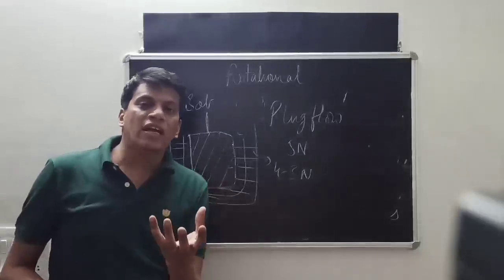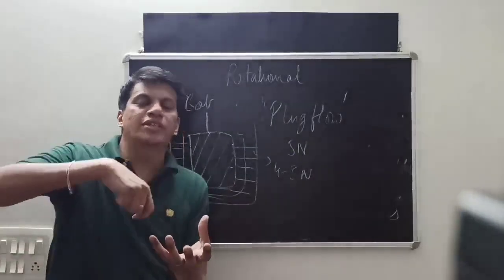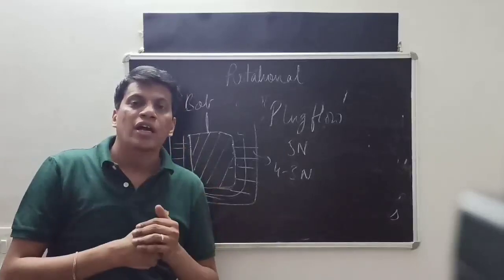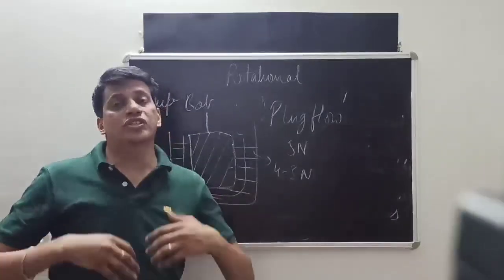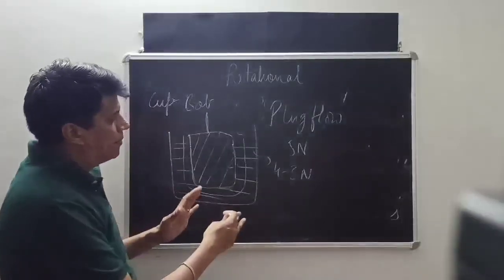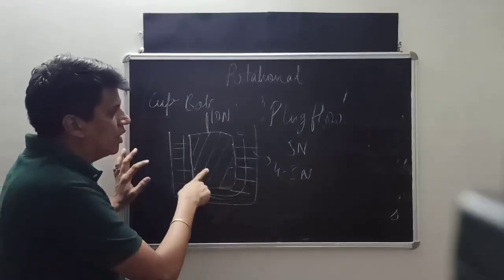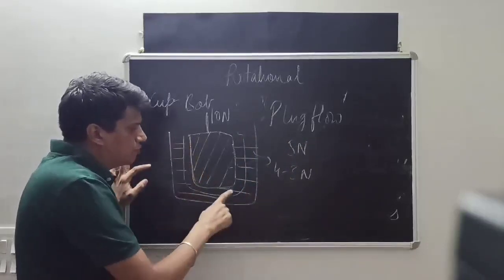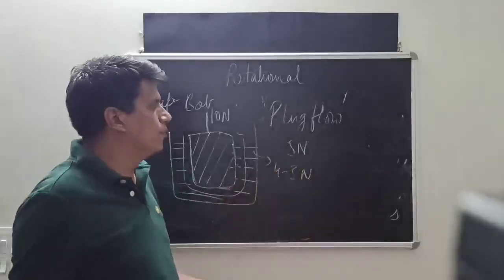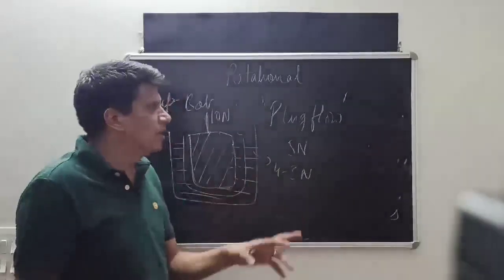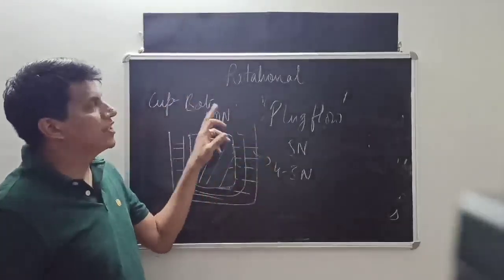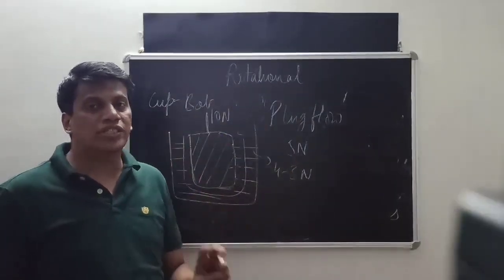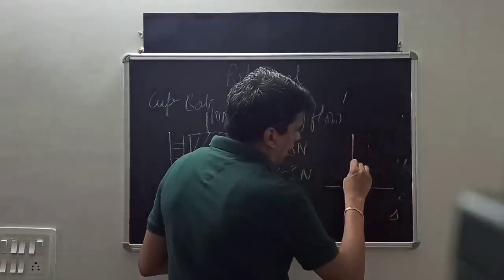This phenomenon is called plug flow, which is characteristic of plastic material tested in cup and bob viscometers. For example, take jam in a bottle — apply force in the center and you will see that only the center moves; the jam close to the container walls does not move until force exceeds a much higher value. When force is 10 N more material moves, but at 5 N only the inner material moves, causing incorrect results. To overcome these two disadvantages, cone and plate viscometers were developed.